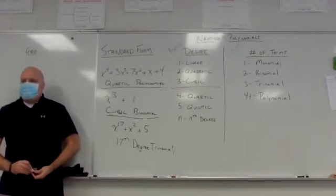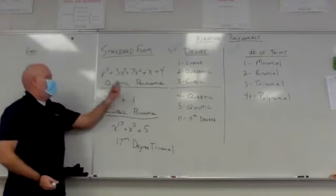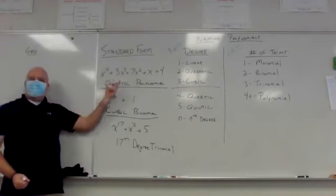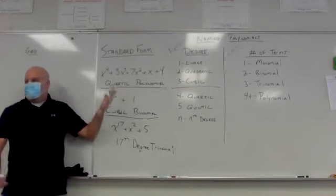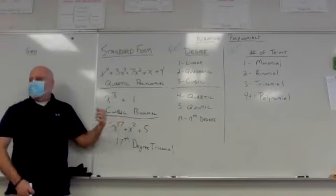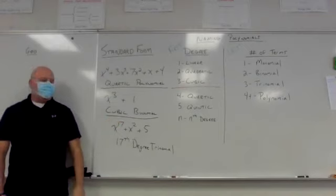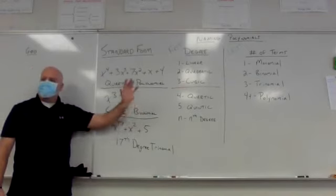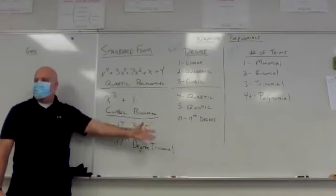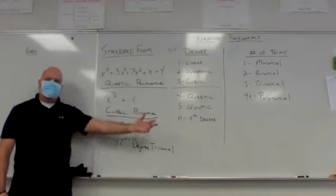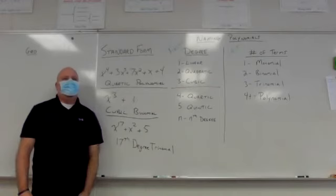So for any number bigger than three, like for the first one, if you don't remember the word quartic, you can just tell me it's a fourth degree polynomial, that's fine. Or if you don't remember quintic, that's fine, just tell me it's a fifth degree polynomial. Or if it's x to the 8th, it's an 8th degree polynomial.